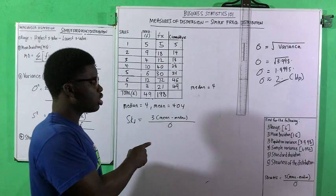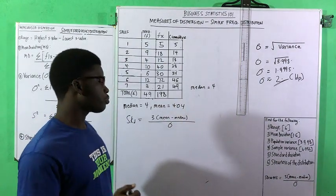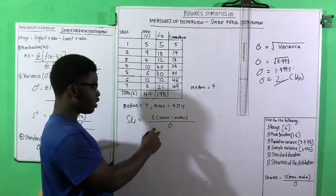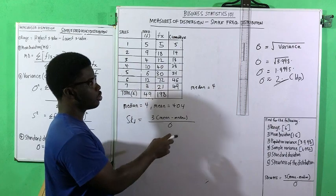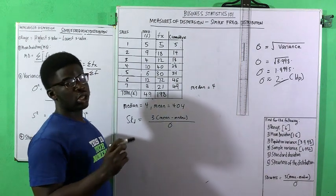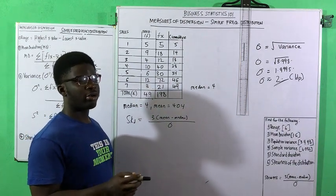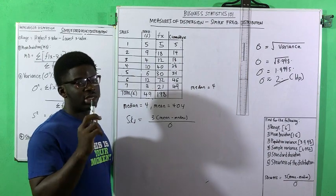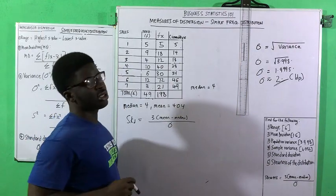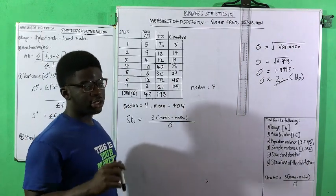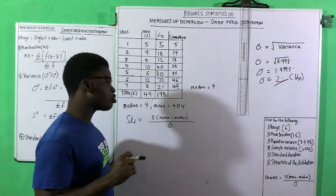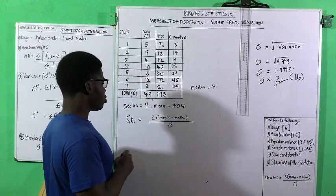Now let's see how we go about the skewness. For the skewness of a distribution, the formula for Pearson's coefficient of skewness is: 3 times (mean minus median), all over the standard deviation. The median I've already calculated is 4. If you don't understand how I arrived at 4, check out the video on measures of central tendency — I'll put the link in the comment section and probably at the end of this video.